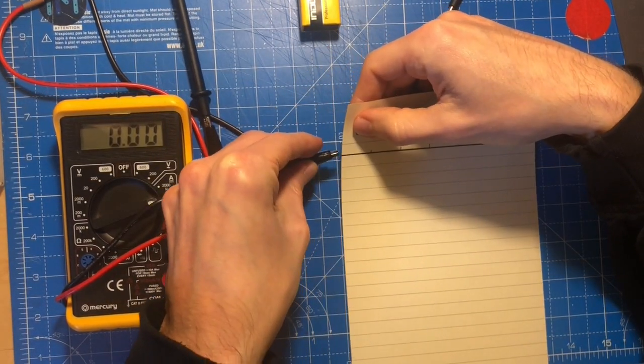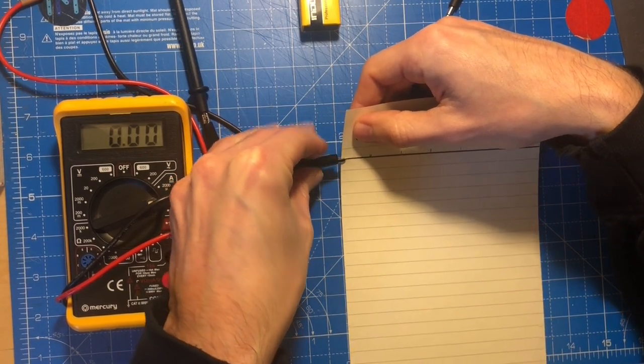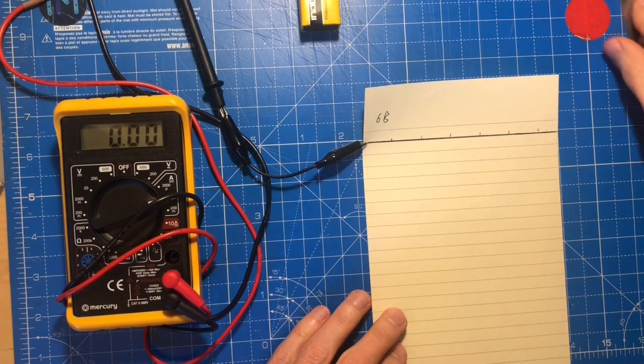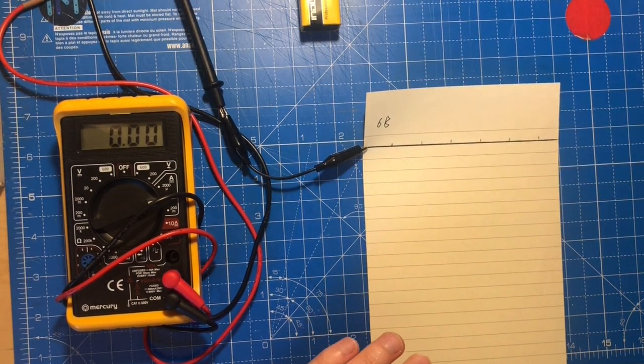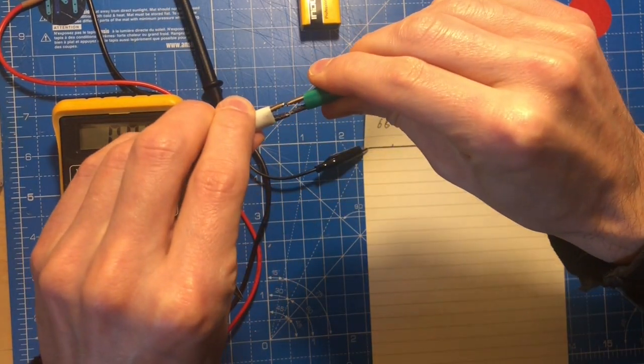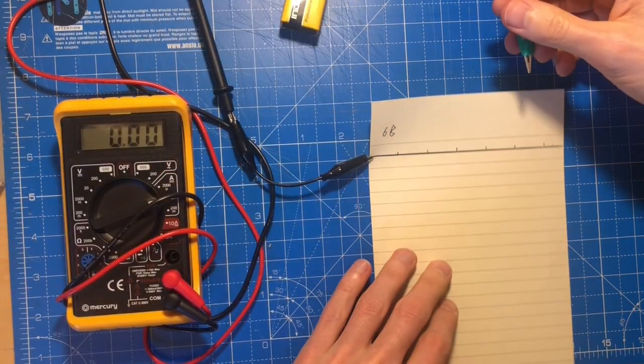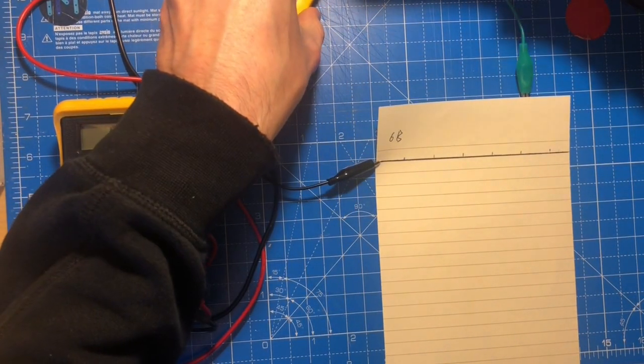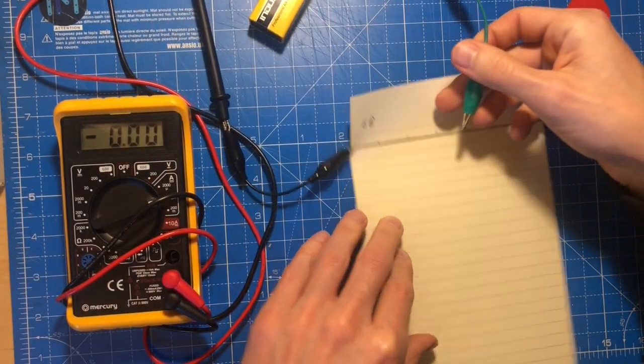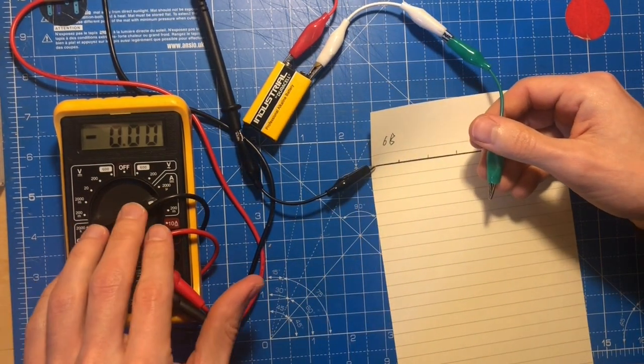This comes out of the ammeter, attaches to the paper. And from the other side of the battery, I'm just going to use two more test leads. Oh, they do fall off easily. So you can see I've got my battery connected up there, going to the ammeter.